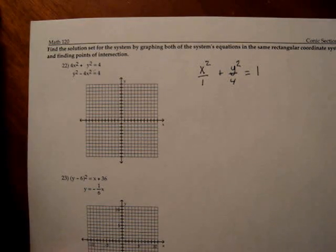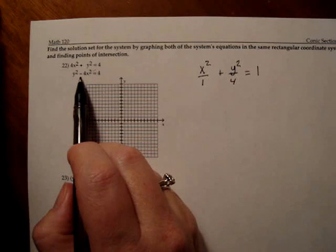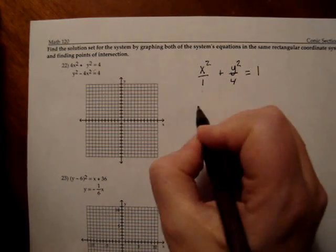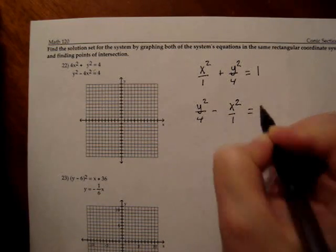Now I do the same thing with the second equation. The second equation has a y squared and an x squared. But this time there's a minus between them. And so I know right away that that is a hyperbola because of the negative sign there. So again, a hyperbola has a 1 on the right hand side of the equation. And so I divide through by 4 and I will get y squared over 4 minus x squared over 1 equals 1.